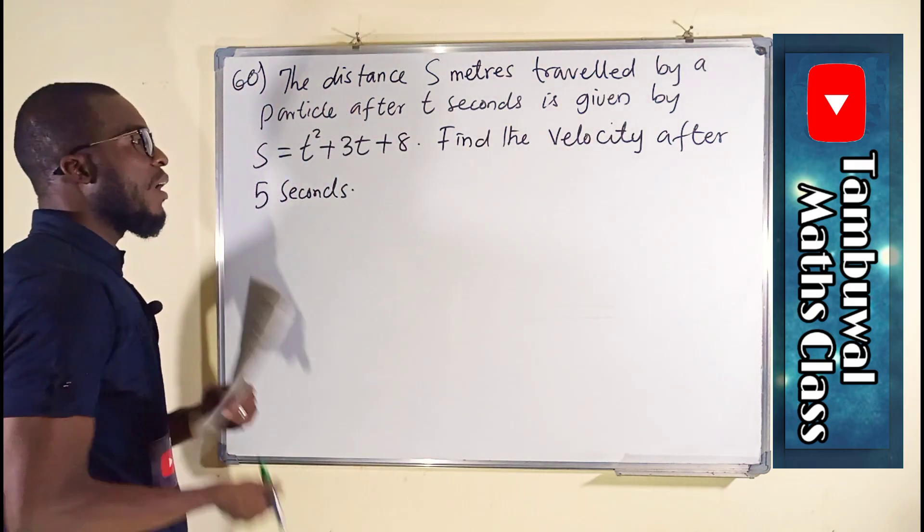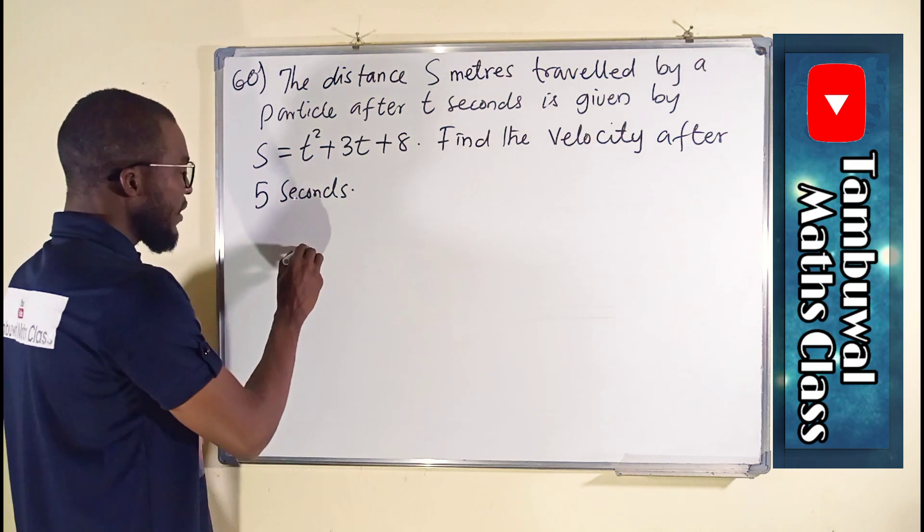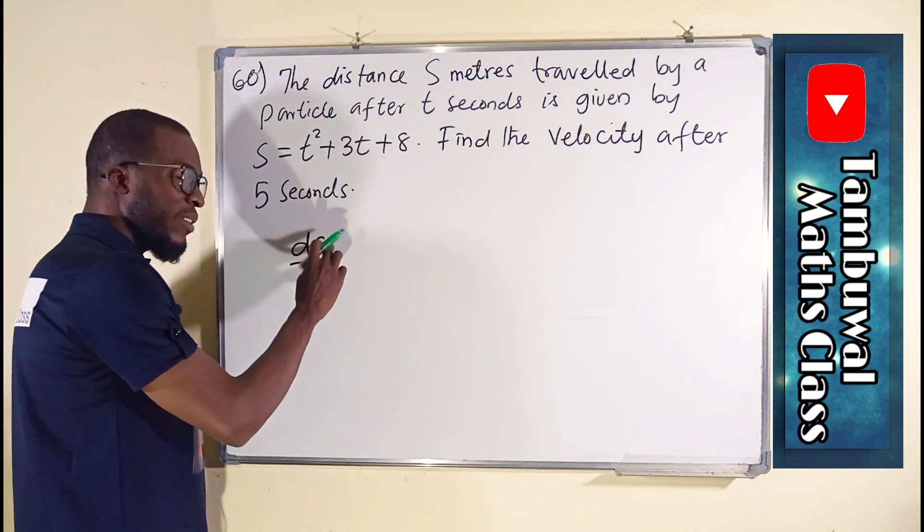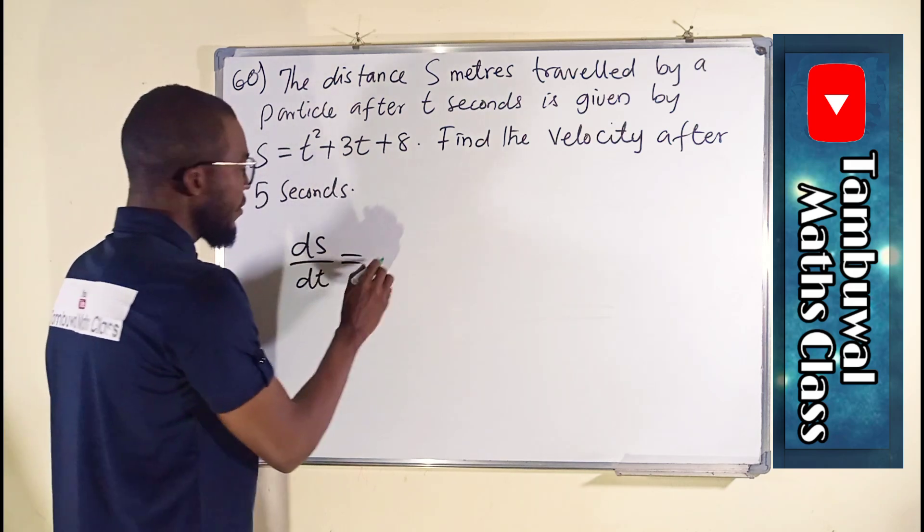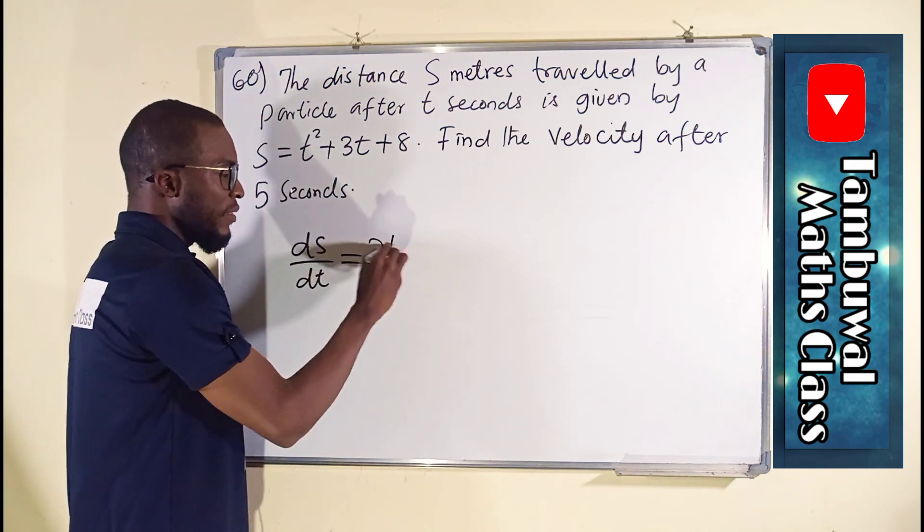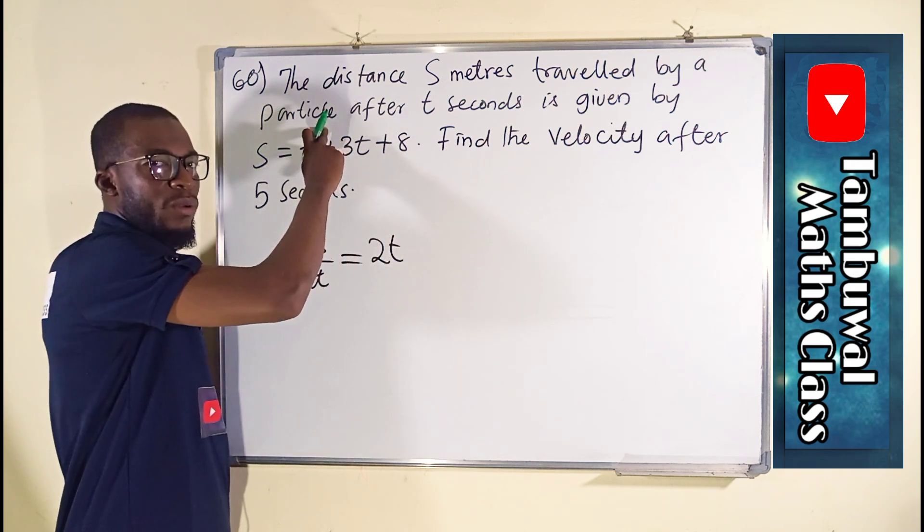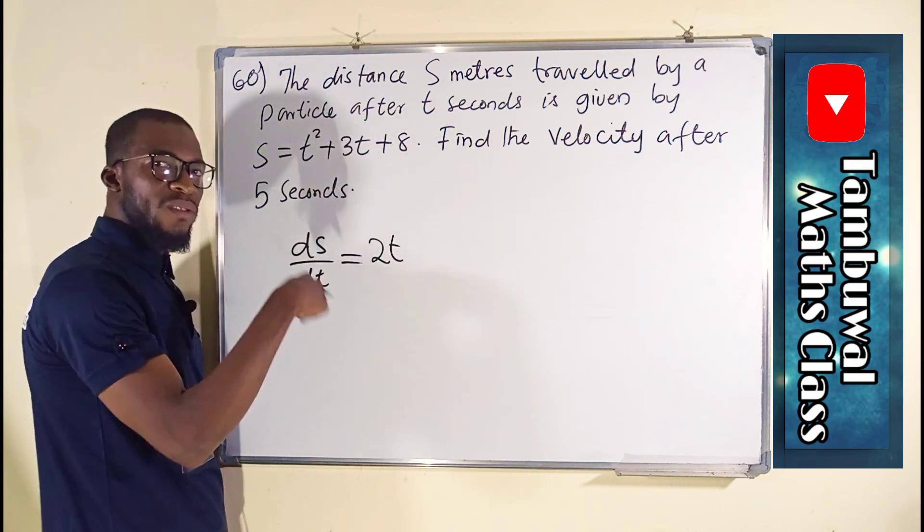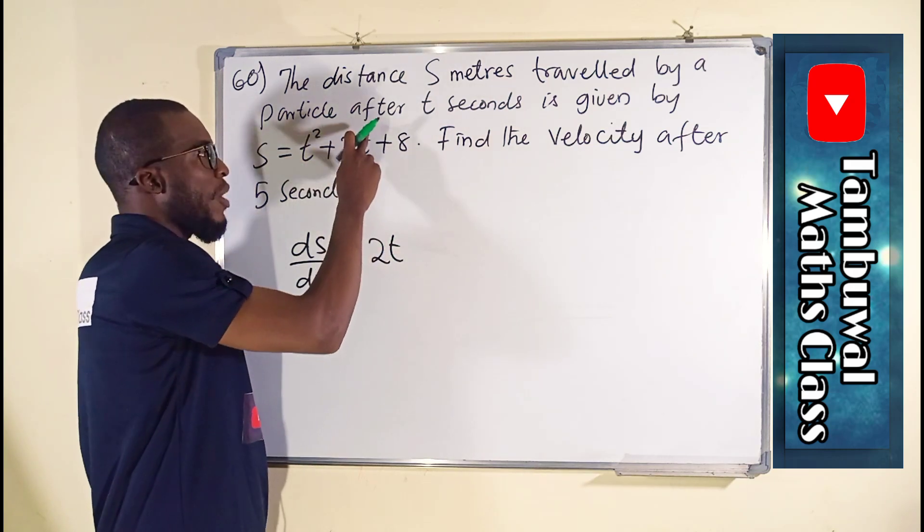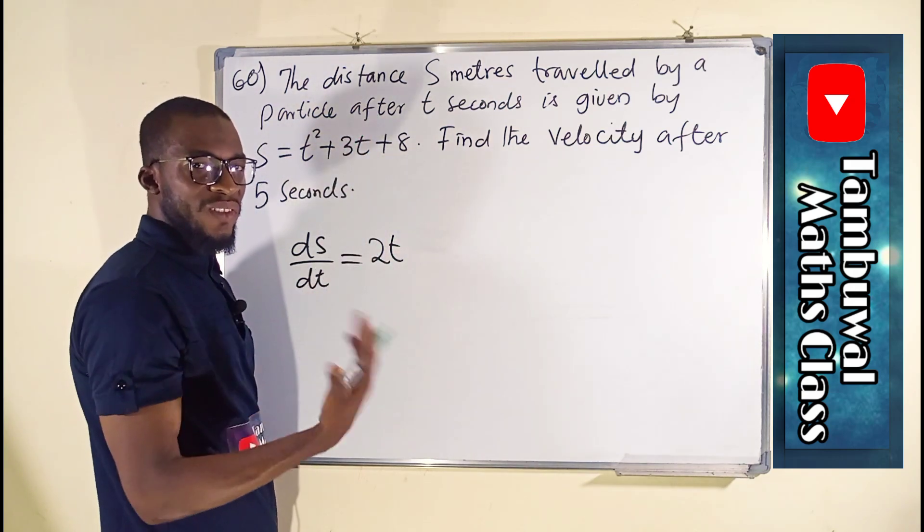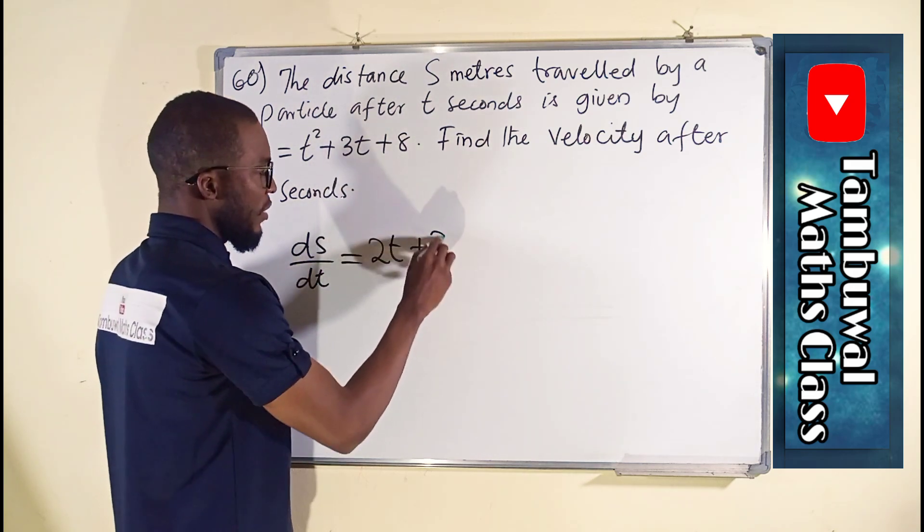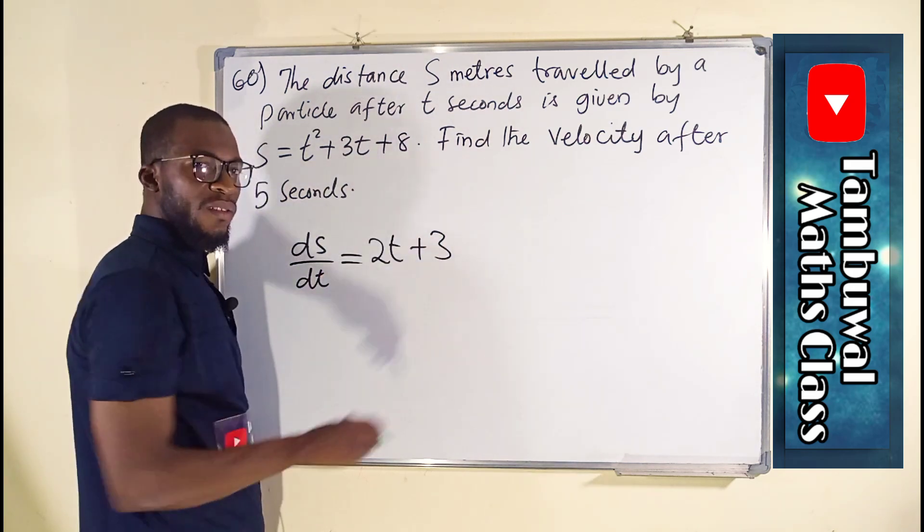So here we are going to find the first derivative, which is ds over dt. Change in s over some time, this is equal to from here, this 2 will multiply down t and that power of t will subtract 1. 2 minus 1 is the same thing as 1. If you have a function that has a power of 1, it will just disappear, leaving the coefficient 3. The derivative of constant is 0.